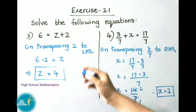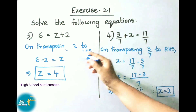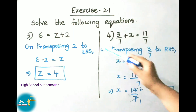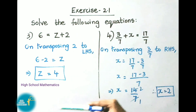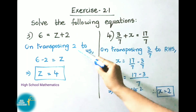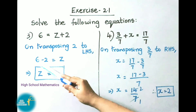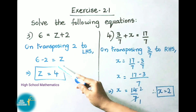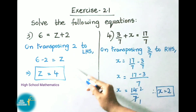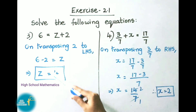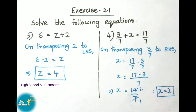See now the third sum: 6 equals to z plus 2. We are going to remove the 2 by transposing it to LHS, that is left hand side. So plus 2 becomes minus 2, giving 6 minus 2 equals to z. That implies z equals to 6 minus 2, which is 4.